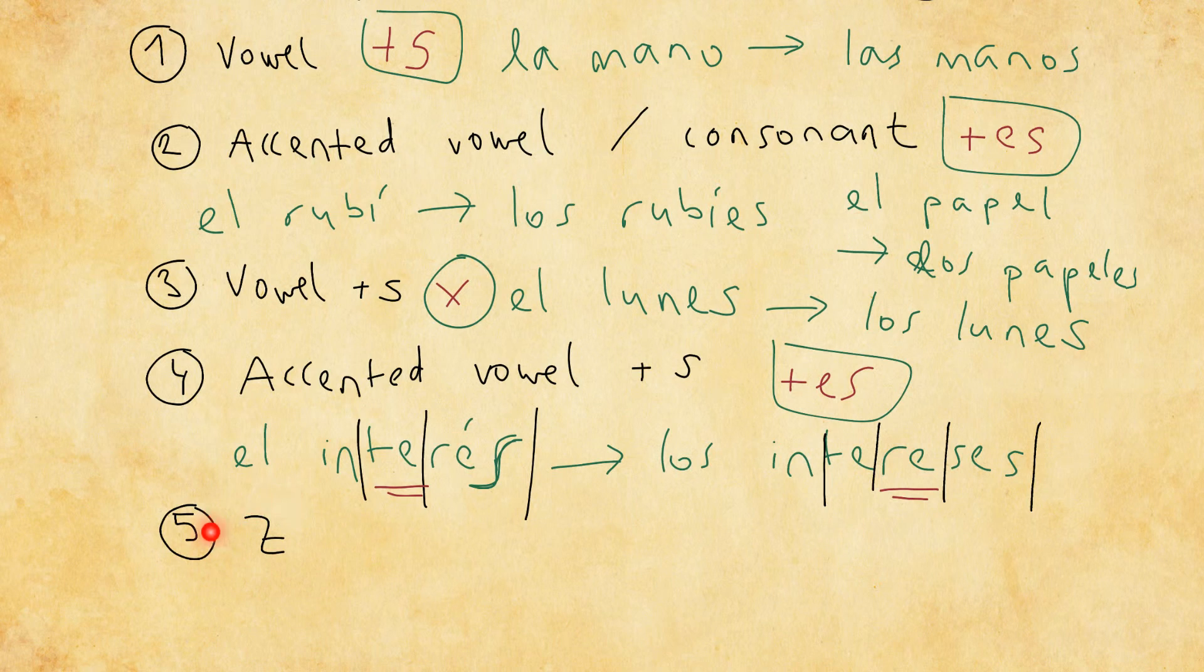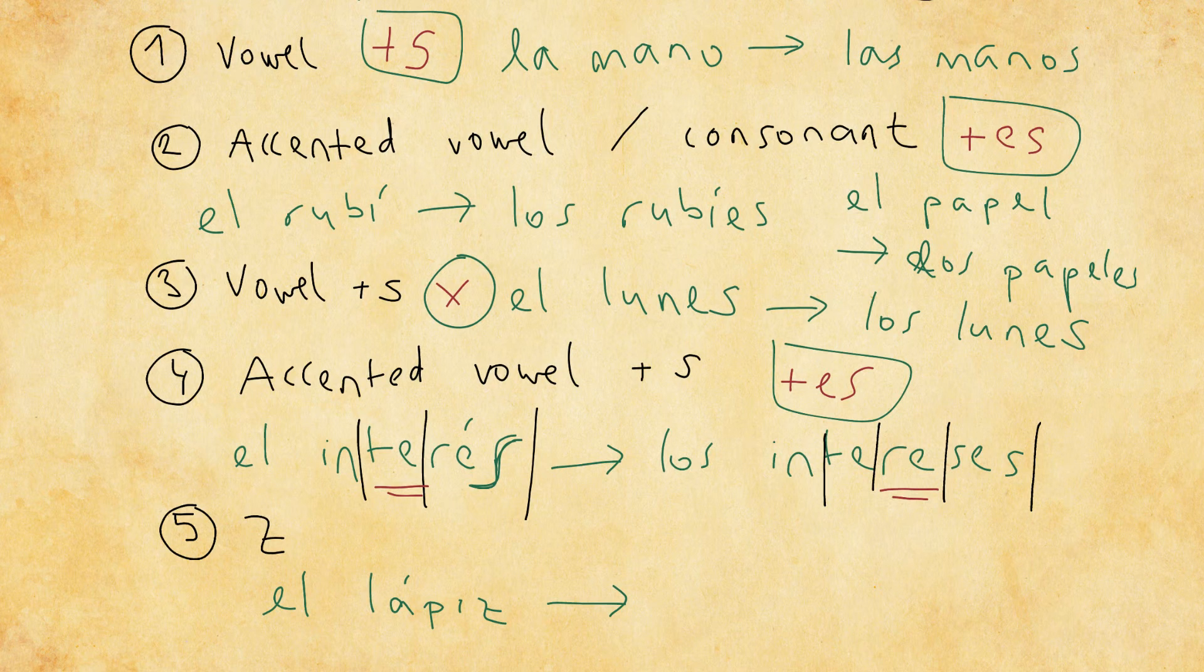I have one last group prepared for you. And this is a group of words that ends with a z. For example, the word lápiz, el lápiz, which means a pencil. El lápiz. And what we do here is that we change the z for a c, and we add es. So el lápiz, but more pencils would be los lápices. Los lápices.